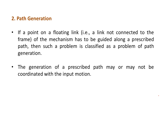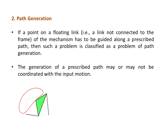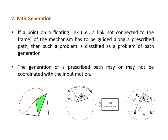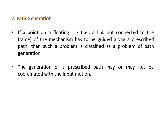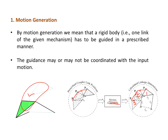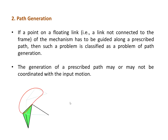Similarly, in path generation, I am interested in a point on a floating link being guided along a prescribed path shown in red. Point P1 has to be guided along the path. If I am interested in generating or tracing that path, that is called path generation. One thing to remember in both motion generation and path generation is that the input and output links need not be coordinated with each other — input and output can function on their own.